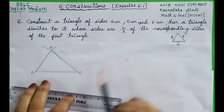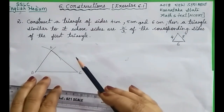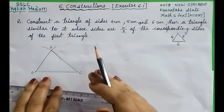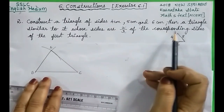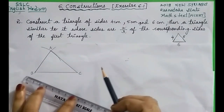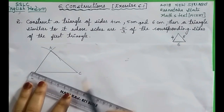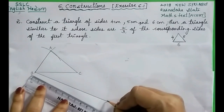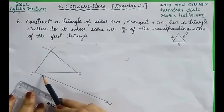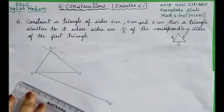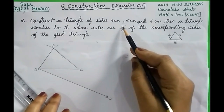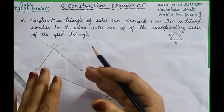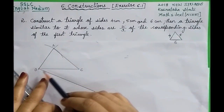We need to construct another triangle which is similar to this triangle, whose every side is 2/3 of the corresponding side of triangle ABC. For this, let us draw a ray BX making an acute angle with the line BC. Dear students, here the ratio is 2/3, so our next triangle should be similar to triangle ABC.